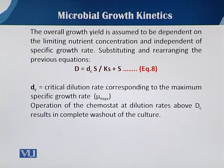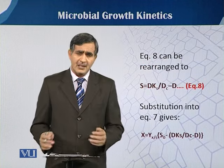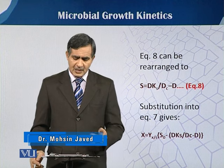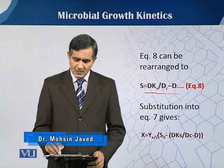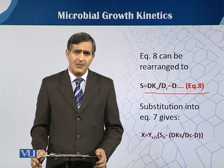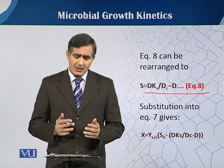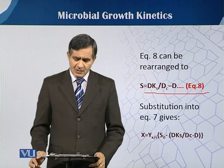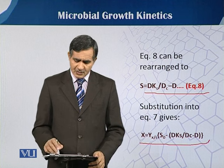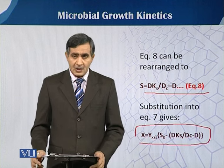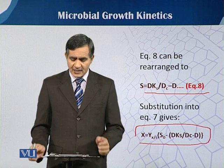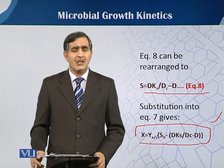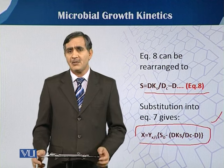By further rearranging equations 7 and 8, we obtain the final equation expressing x in terms of the yield coefficient and s₀. If we know the critical dilution rate and the K_s value, we can determine the biomass concentration in continuous culture.